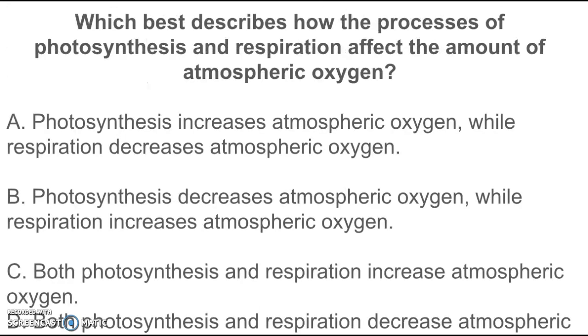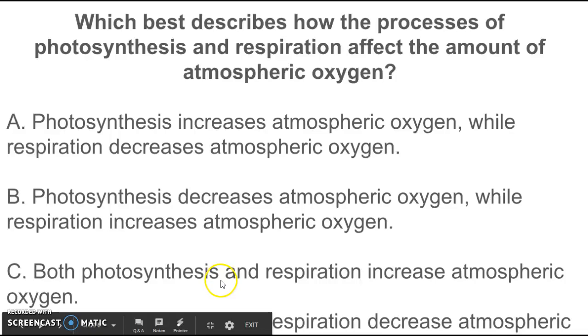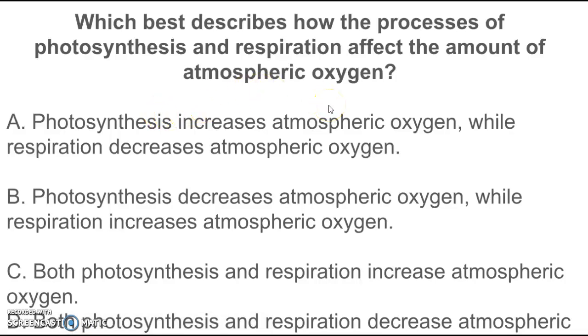Which best describes the processes of photosynthesis and respiration and how they affect the amount of atmospheric oxygen? We know photosynthesis is where plants take in carbon but release oxygen, so we know that part A is right: photosynthesis increases atmospheric oxygen while respiration decreases atmospheric oxygen. So answer A would be right. Keep in mind we animals use the oxygen up, so the more animals, the more oxygen we're going to consume or use. The more plants, the more they make.